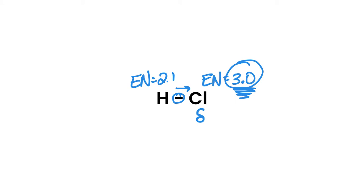So we use the Greek symbol delta, the lowercase delta, and then a negative to indicate that that would have a partial negative charge. That means that the hydrogen would have a partial positive charge, because the electrons are spending less time around that end of the molecule.